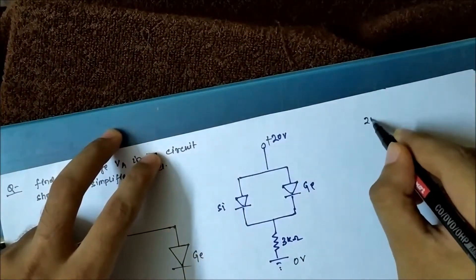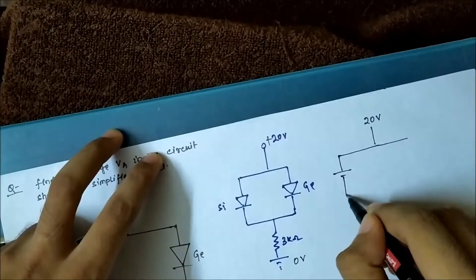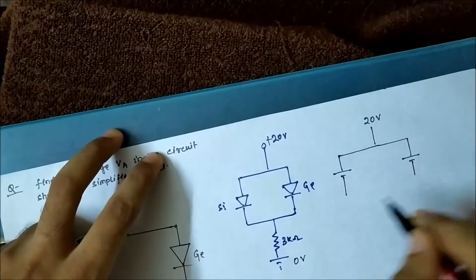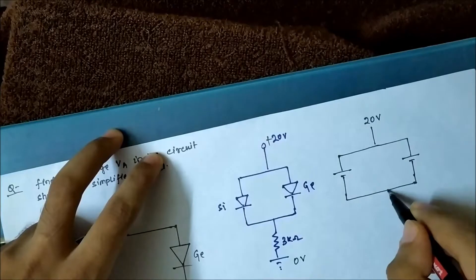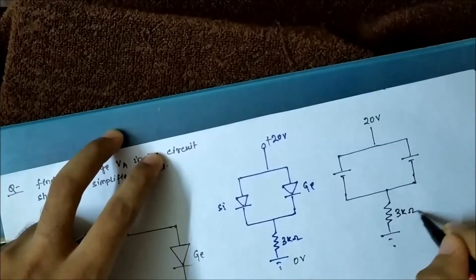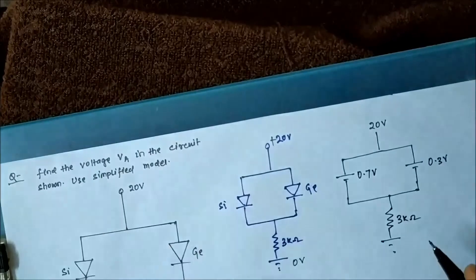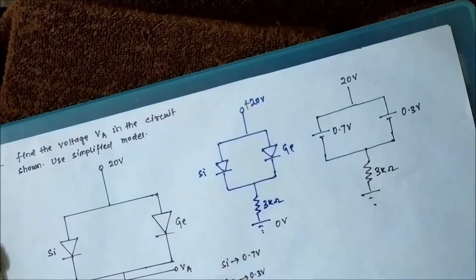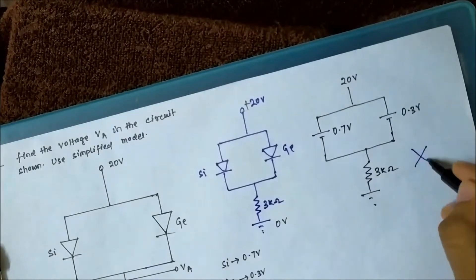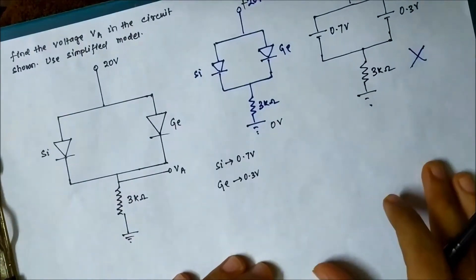Looking at the equivalent circuit model, you might think we replace both diodes with their cut-in voltages — germanium as 0.3 volt and silicon as 0.7 volt — both forward biased in parallel. But if you think this, you are wrong. This is the wrong representation. Let me tell you the correct representation.